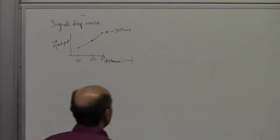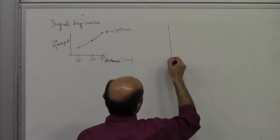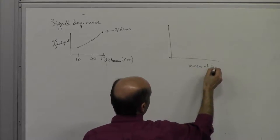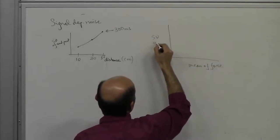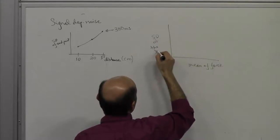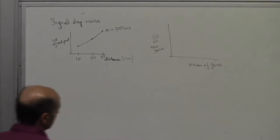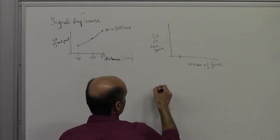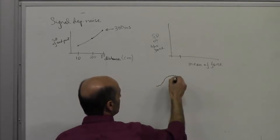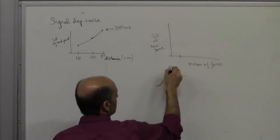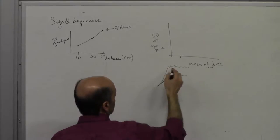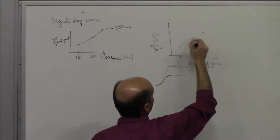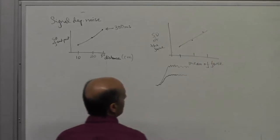The simpler way to see this is to ask somebody to produce force and measure the mean and standard deviation of force. You ask them to produce one newton, then two newtons. Every time, you remove visual feedback and see there's some wiggle. At two newtons, the wiggle is a little higher, and so forth. You again see that the standard deviation increases as the mean force increases.